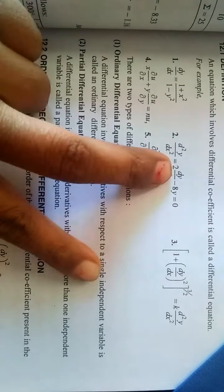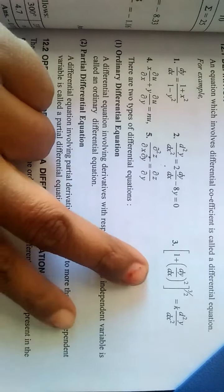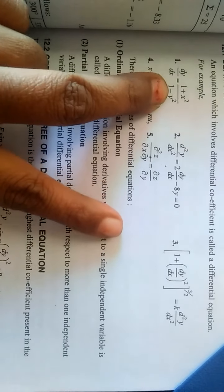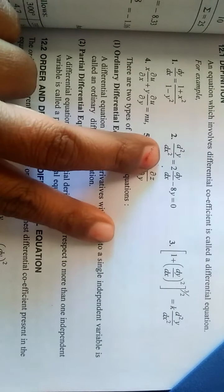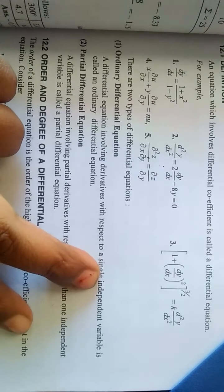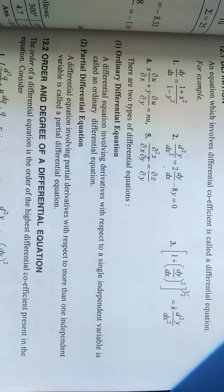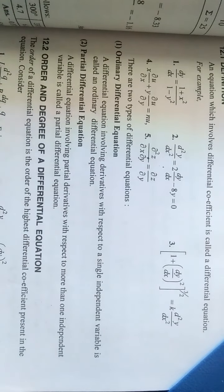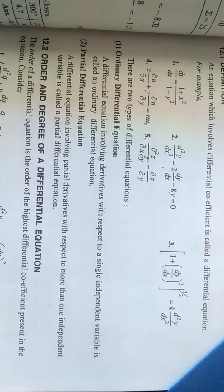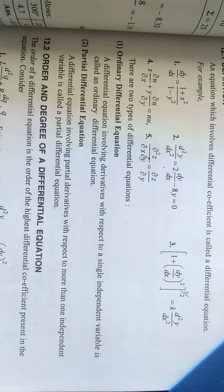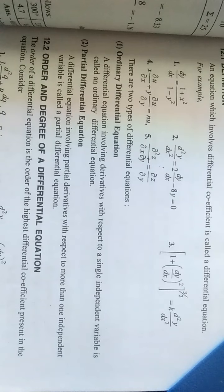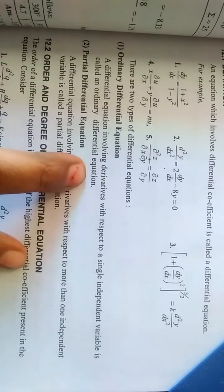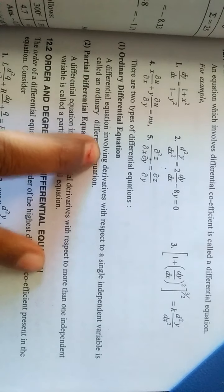Examples of differential coefficients: dy/dx, d²y/dx², du/dx, du/dy. This is a differential equation. There are two types: first is ordinary differential equation and second is partial differential equation.